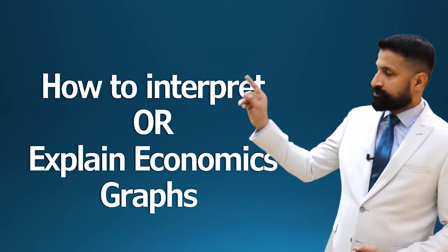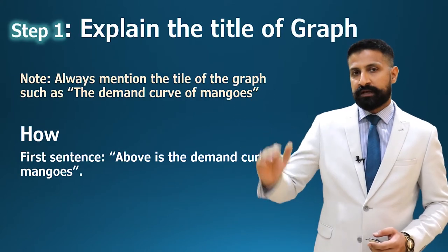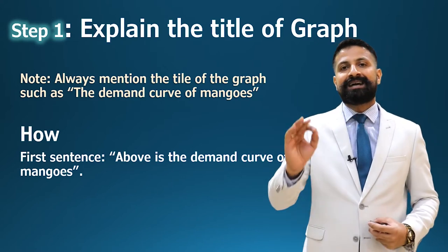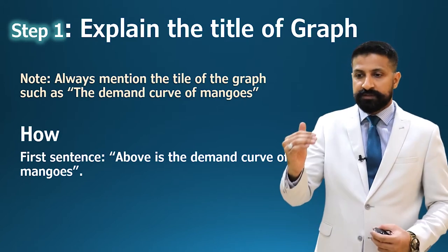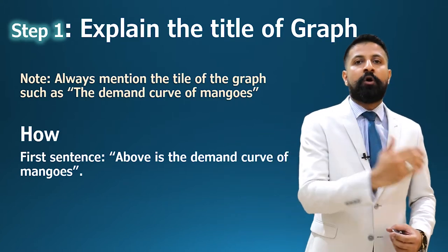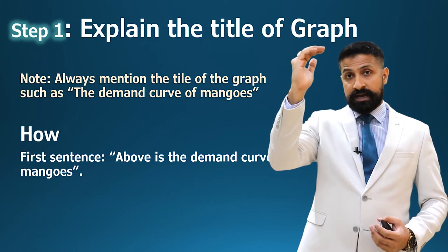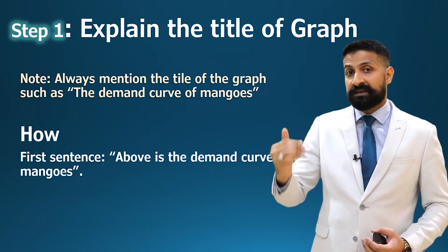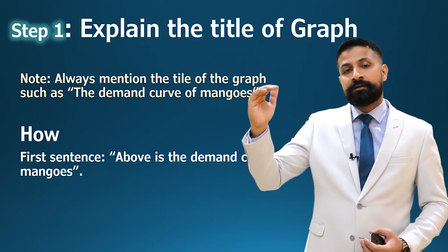In this special lecture I'm going to teach you how to write the explanation of, or interpret, economics graphs. The lesson objective is: how to interpret or explain economics graphs. I'm going to explain it in nine different steps. Step one: the first thing you have to do is explain the title of the graph. When I check exam papers of international students, I find that students forget to write the title of the graph — such as 'demand curve of mangoes' or 'supply curve of wheat.' Please don't forget to write it down.